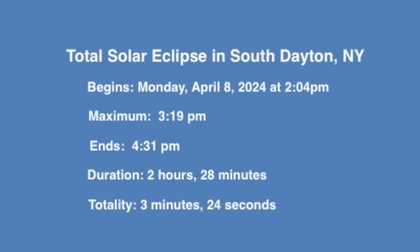For me, the eclipse will begin on Monday at 2:04 p.m. and reach maximum at 3:19 p.m., ending at 4:31 p.m. for a total duration of 2 hours and 28 minutes. The totality will last 3 minutes and 24 seconds. This will be a once-in-a-lifetime event.